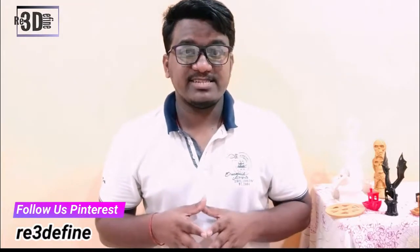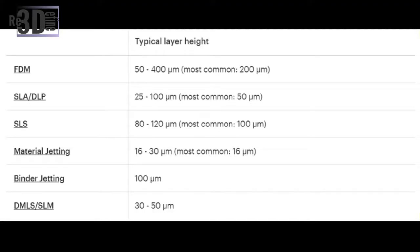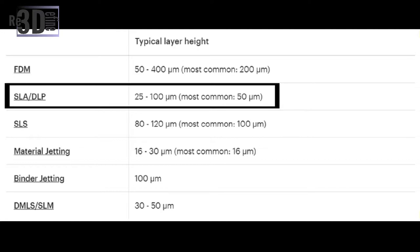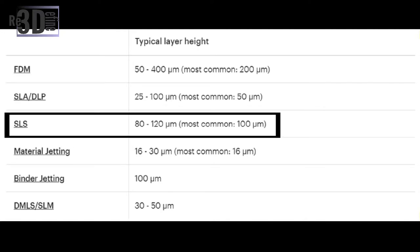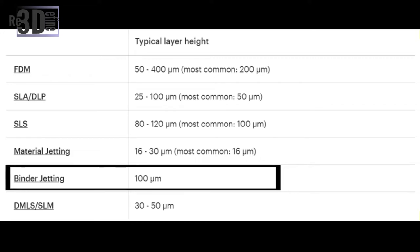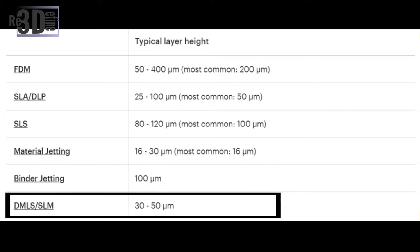What is the typical layer height for each process? The table shown summarizes the typical and standard layer heights for the most common 3D printing processes. For FDM, it is between 50 and 400 µm, with 200 µm most common. For SLA and DLP, 25 to 100 µm, with 50 µm most common. For SLS, 80 to 120 µm, with 100 µm most common. For metal jetting, 16 to 30 µm, with 16 µm most common. For binder jetting, it is 100 µm. For DMLS or SLM, it is between 30 to 50 µm.